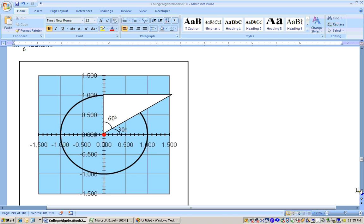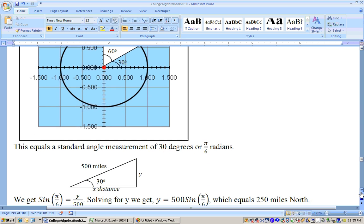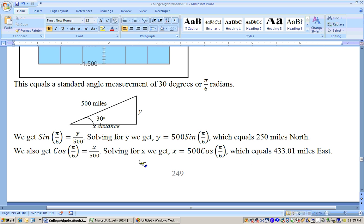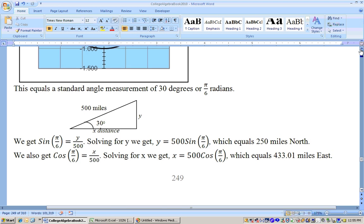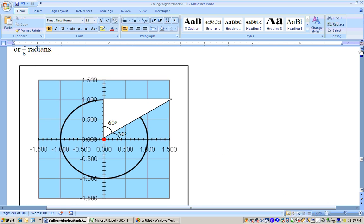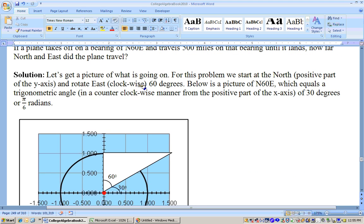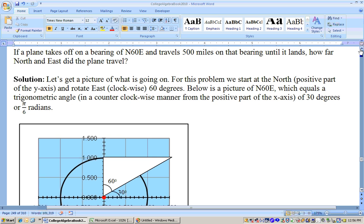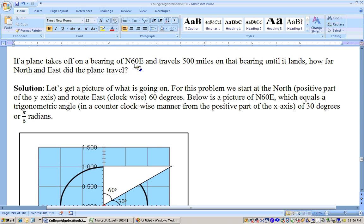So, if we do a problem that does this, for example, here's the problem at the top that says, let's get to it. It says, let's get a picture of what's going on. Let's get up here a little bit higher. If a plane takes off at north 60 east and travels 500 miles on that bearing until it lands, how far north and how far east did it land?